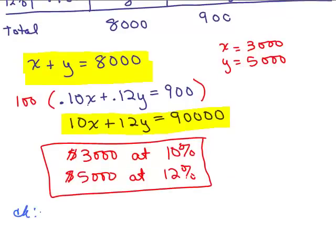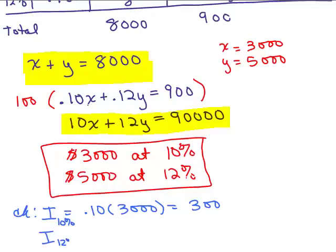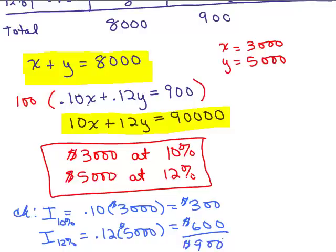And so we could also quickly check that. How do you get your interest earned? You do your percentage times your amount of money you put in there, and so $300 is what you would earn at that 10% account. And interest earned at the 12%, is 0.12 times 5,000, which was $600. The check's really just for yourself. And that adds up to $900, and the original problem said the interest did earn a total of $900. So this is correct, we invested $3,000 at 10% and $5,000 at 12%.